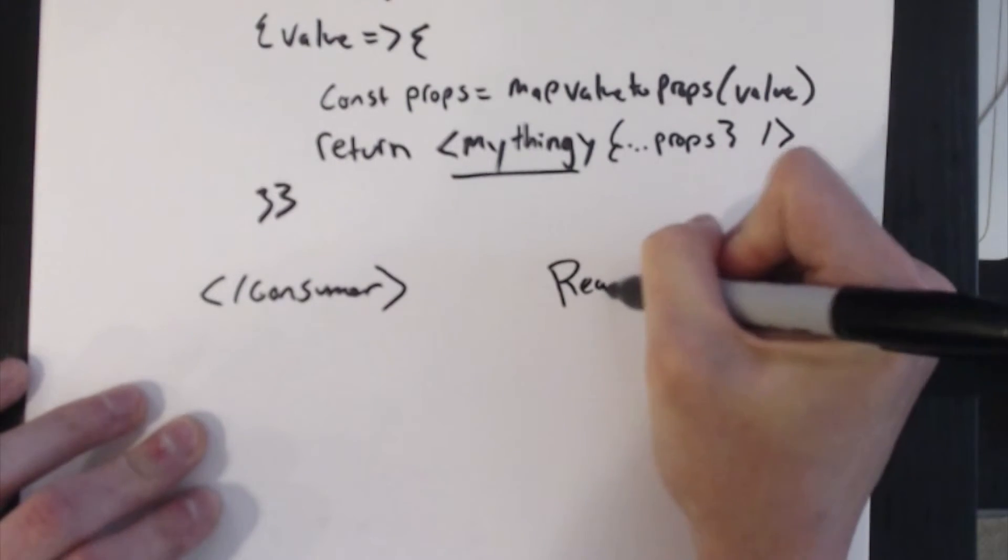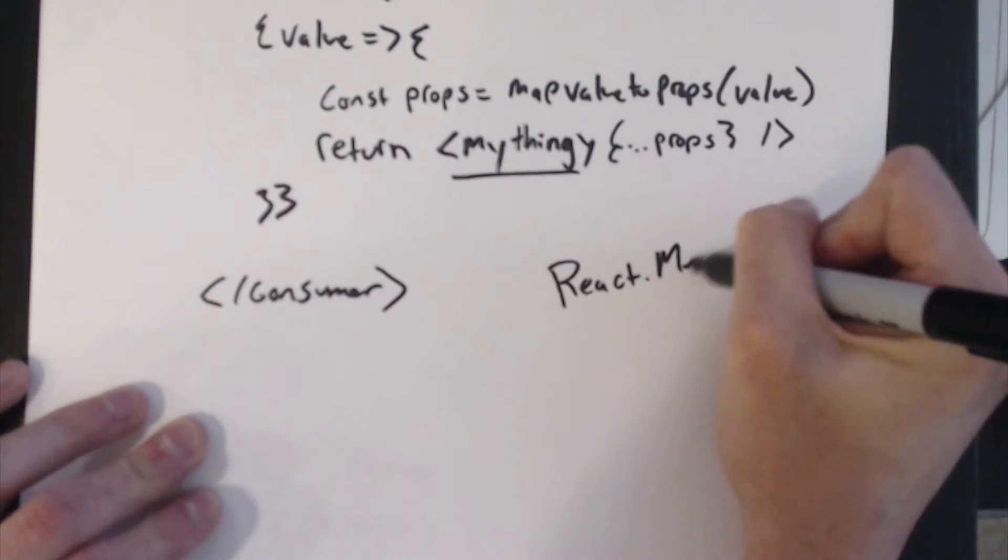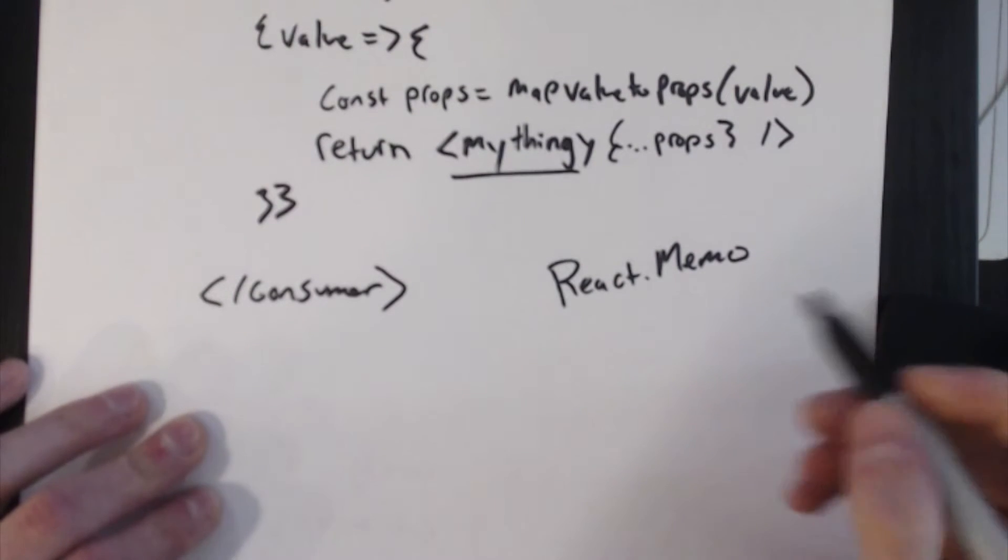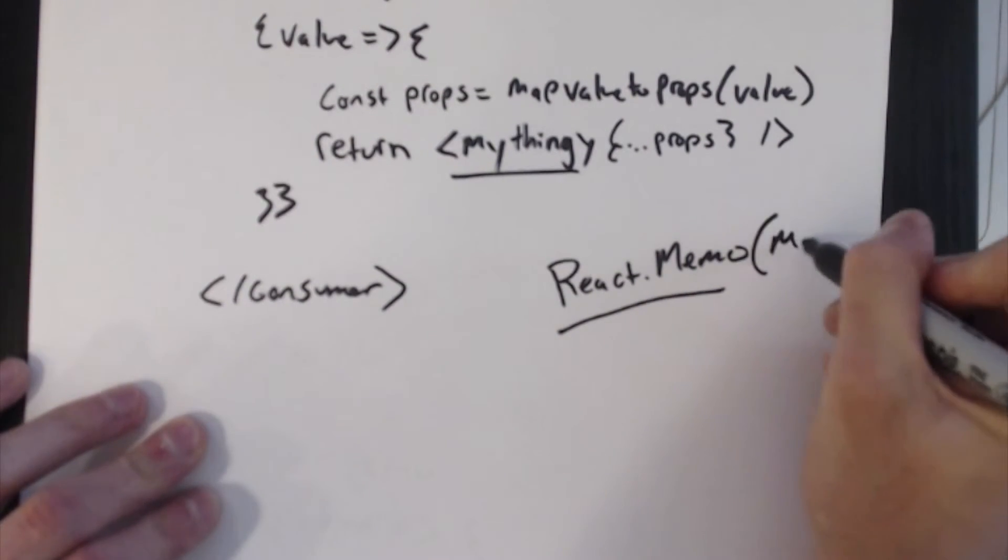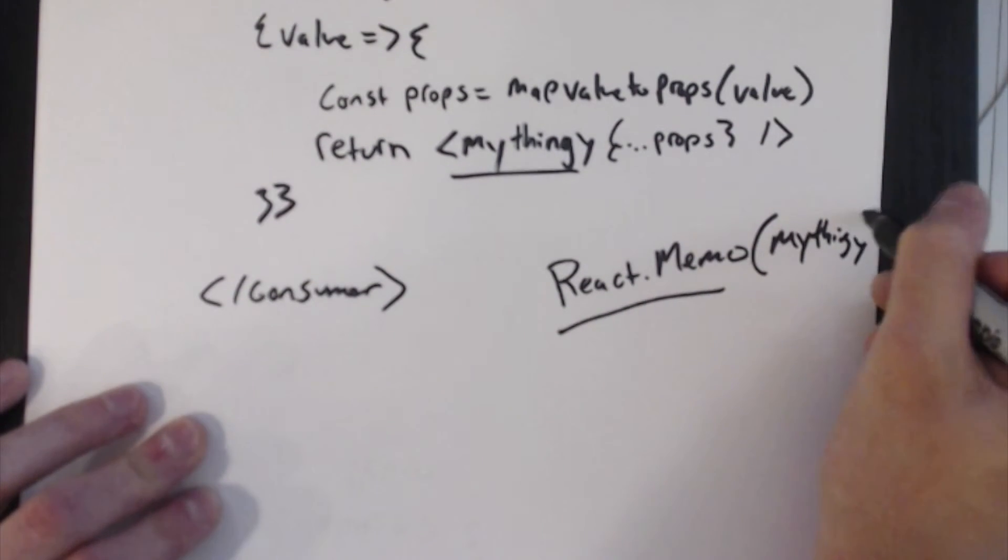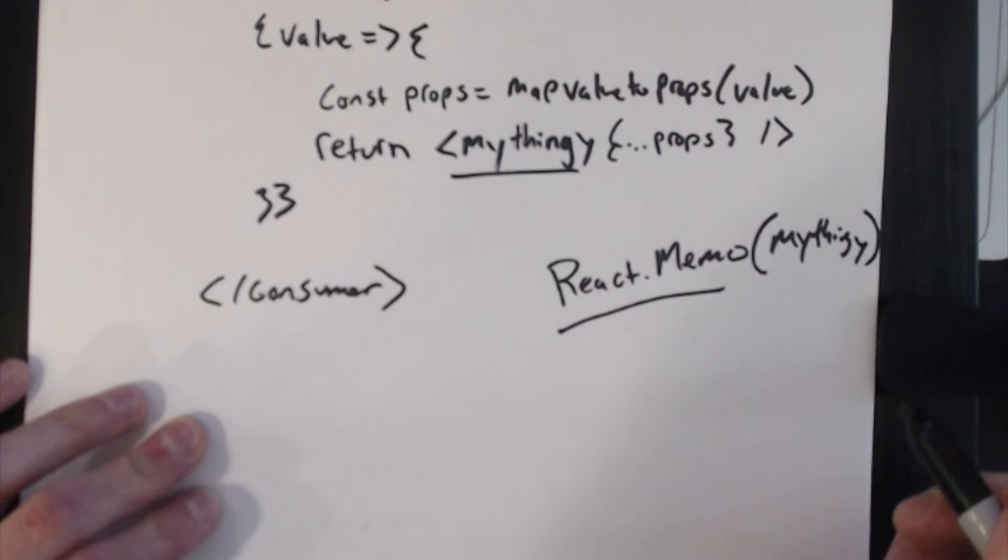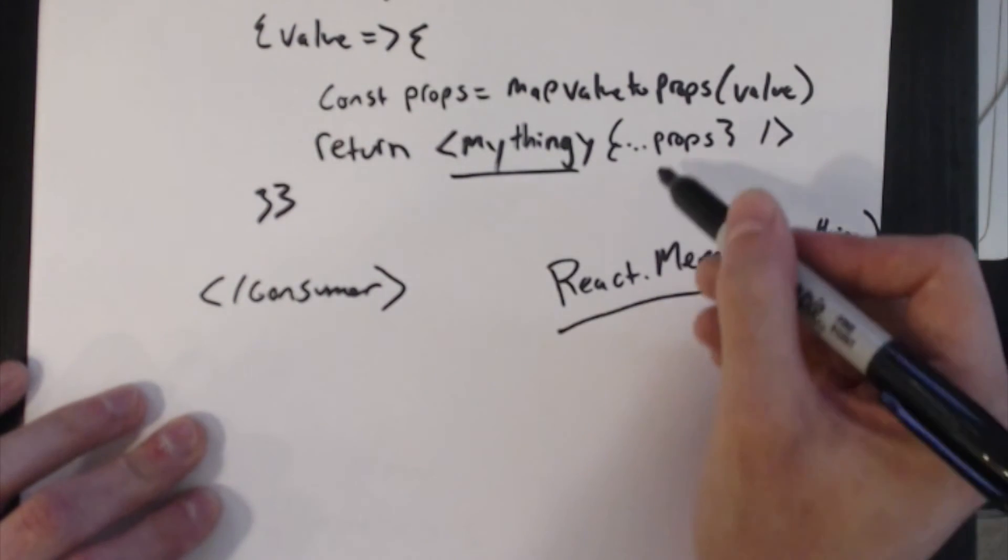So down here my thingy is assumed to be a component that's been wrapped in React.memo before we render it. That makes it a pure component where if the props have not changed before and after, then it will not re-render—it'll bail out of re-rendering. And that's a major performance optimization if there's a lot of components down the tree from my thingy that we avoid re-rendering.